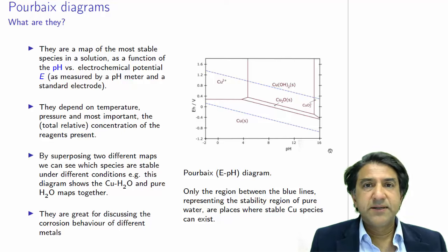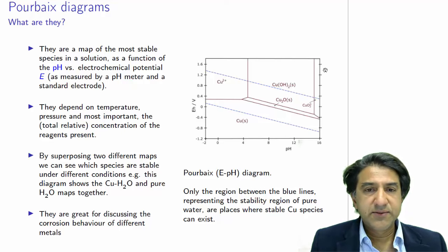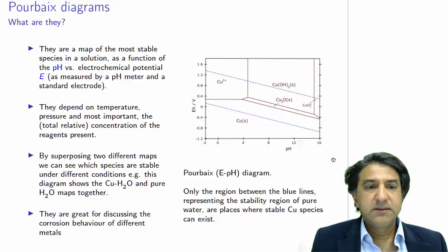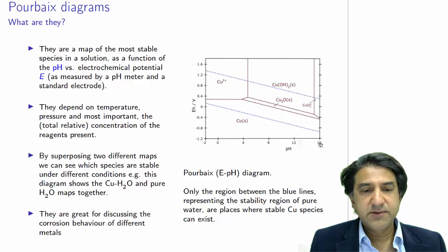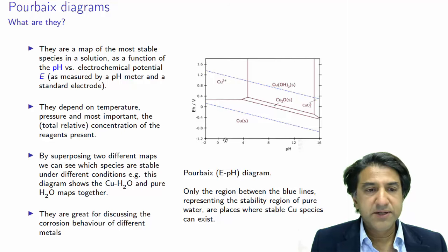So Pourbaix diagrams, what are they? Here's one over here. You can see on the horizontal axis is the pH, a bit like the log concentration pH diagram that we looked at before. But on the vertical axis, we have now electrochemical potential.